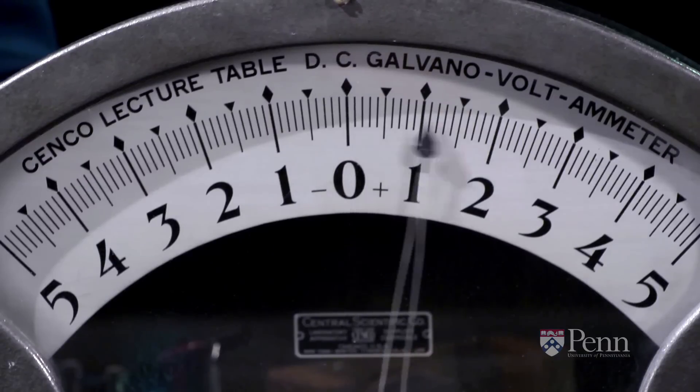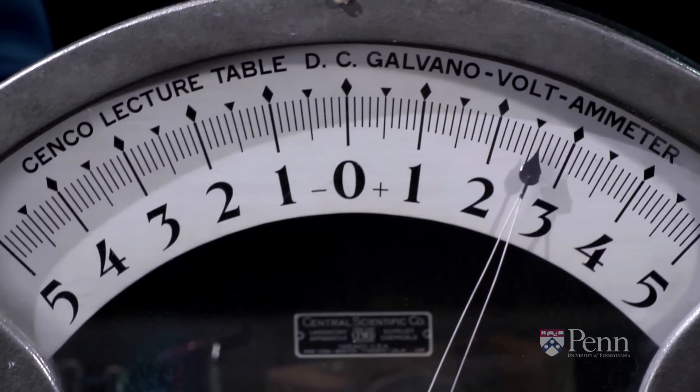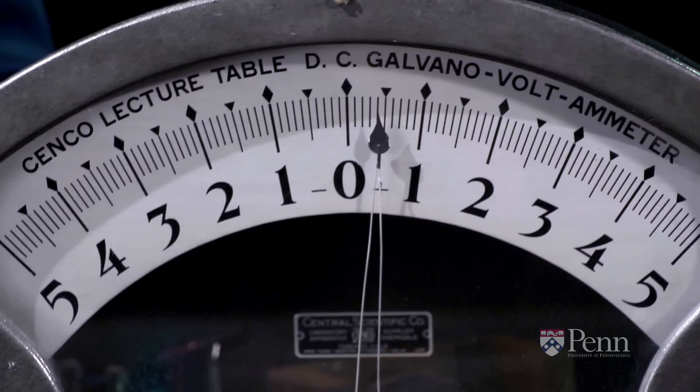But the ammeter starts by jumping to a high value, and then slowly deteriorates until it reads zero.